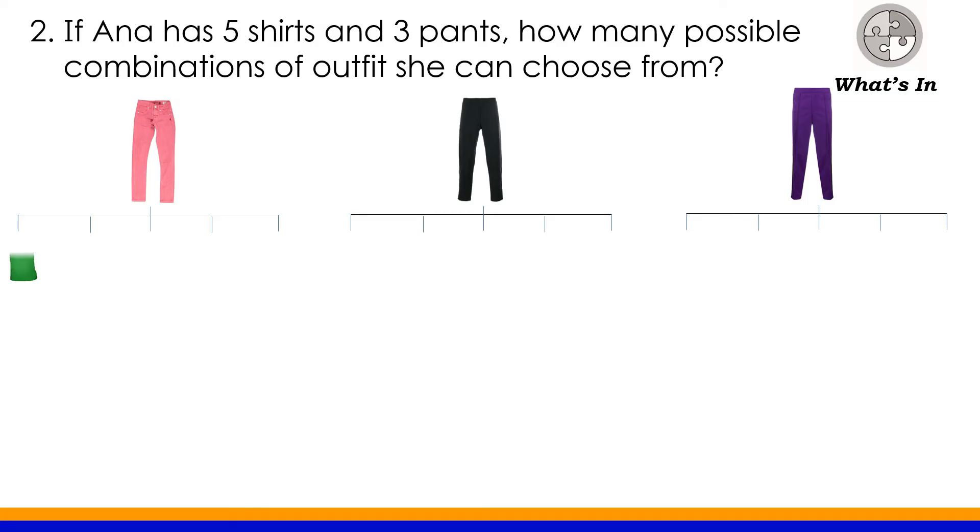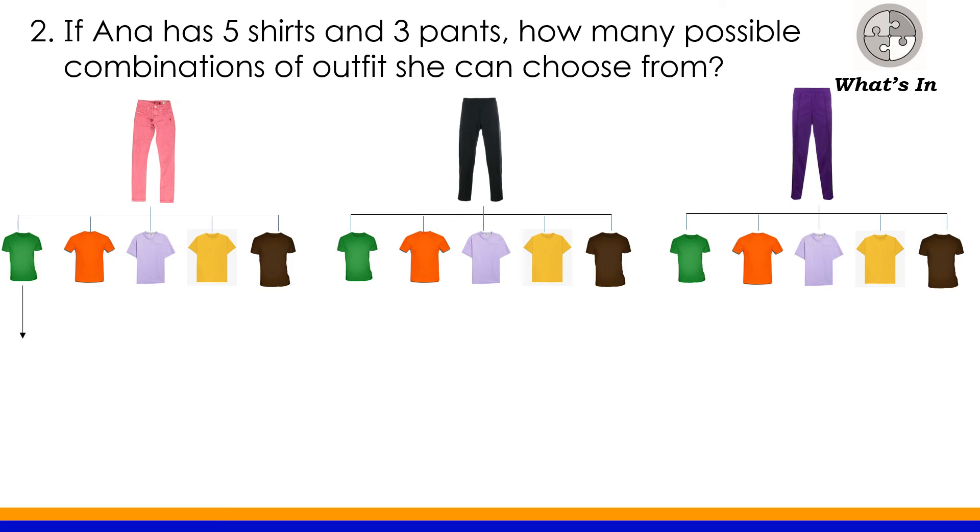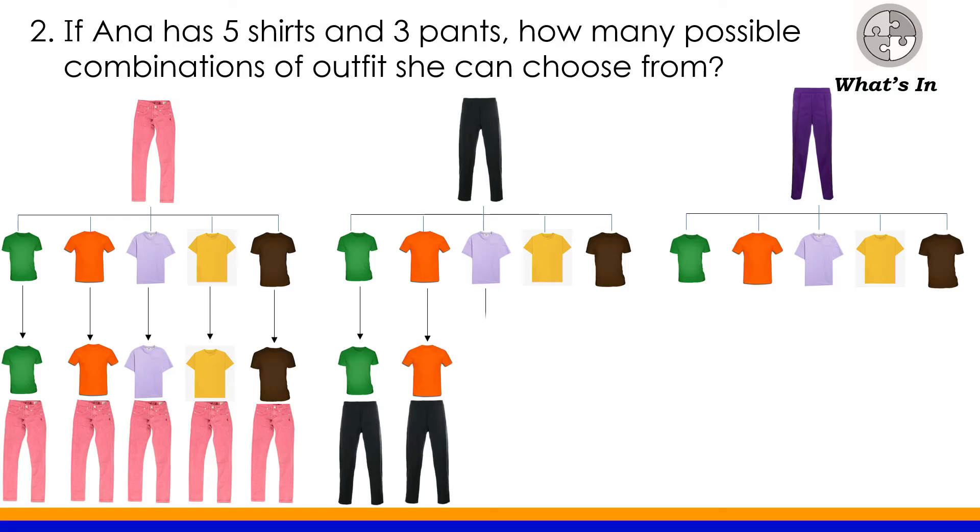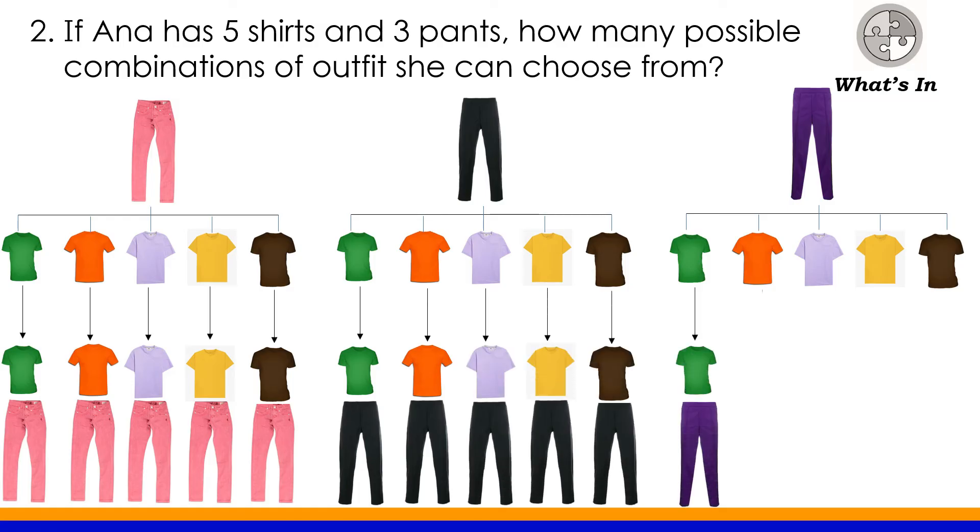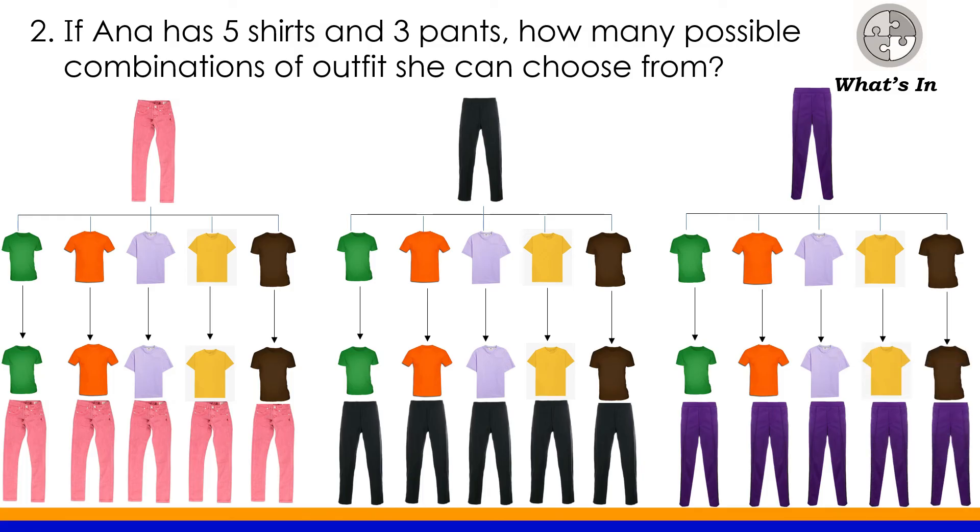Same din dito sa pangalawang pants natin. Pangatlo, same din. So para malaman natin yung mga possible na mga combinations ng outfit, ikukumbay natin yung pants at saka ng shirts. Yan. Ito yung mga possible na mga outfits na pwede niyang pagpilian, class. For the third pants, ito naman. Okay, bilangin natin ilan lahat.